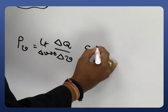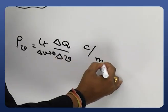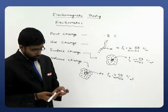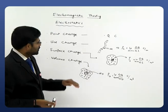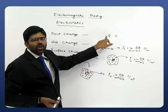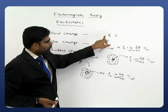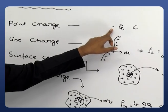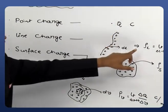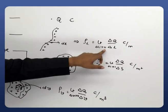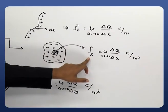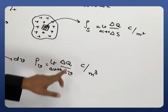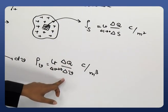What are the units here? Charge units are Coulombs, and volume units are meter cube, so the units are Coulombs per meter cube. Apart from the point charge Q, we can observe different types of charges. For a line charge, we use line charge density to calculate Q. Using surface charge density, we can calculate the total charge on a surface. Using volume charge density, we can calculate the total charge within that particular volume.